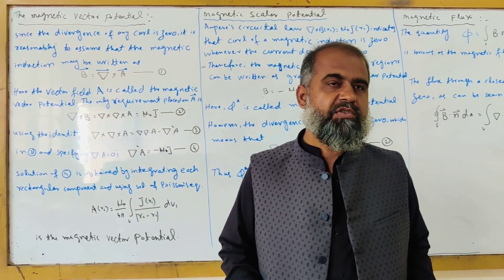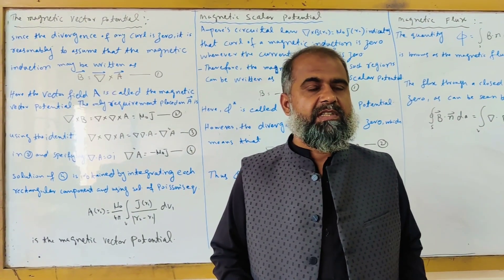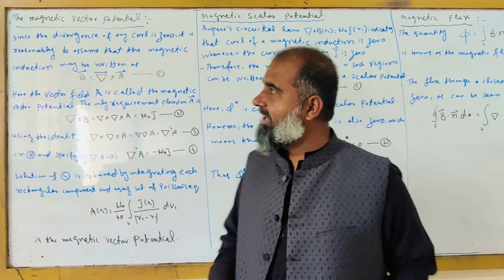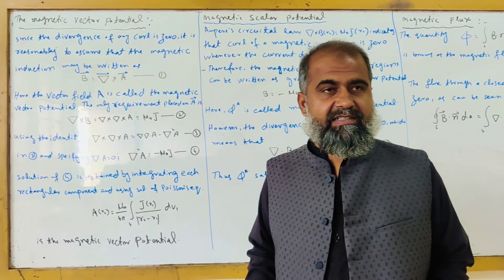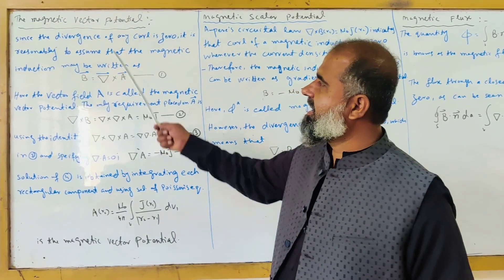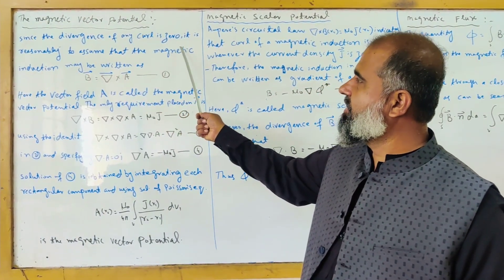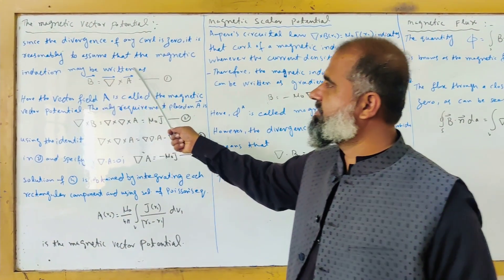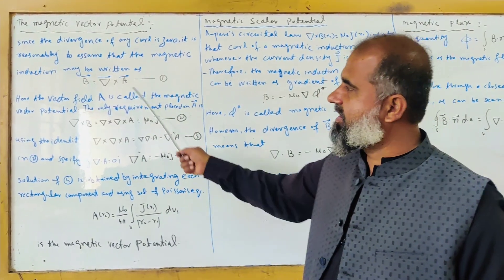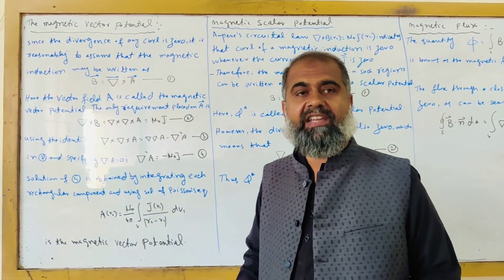Important concepts. Well, first of all, we will discuss magnetic vector potential. What is that? Since the divergence of any curl is zero, it is reasonable to assume that the magnetic induction may be written as B equals del cross A.